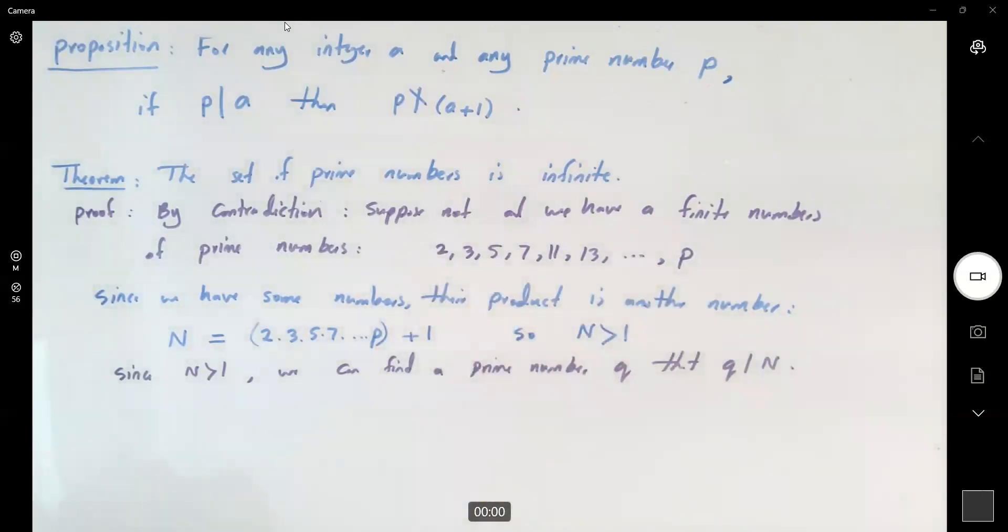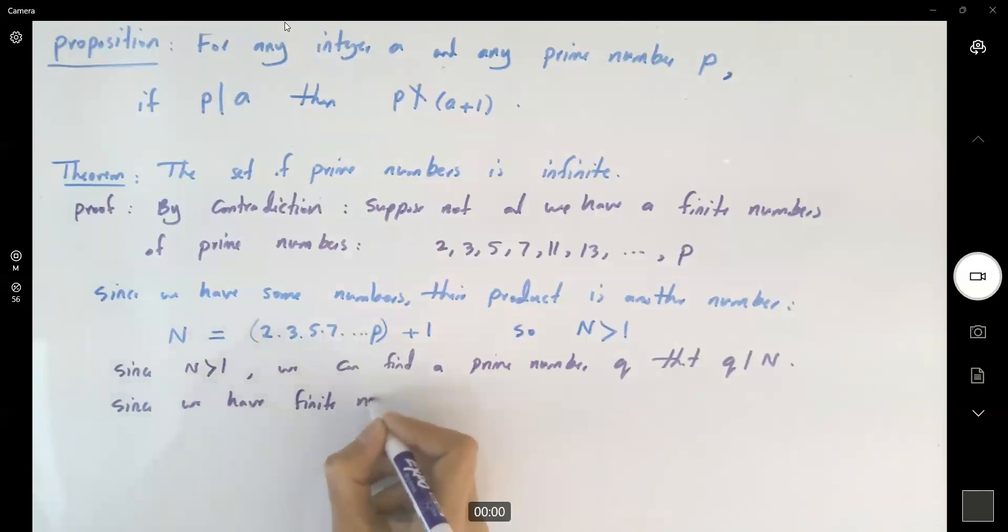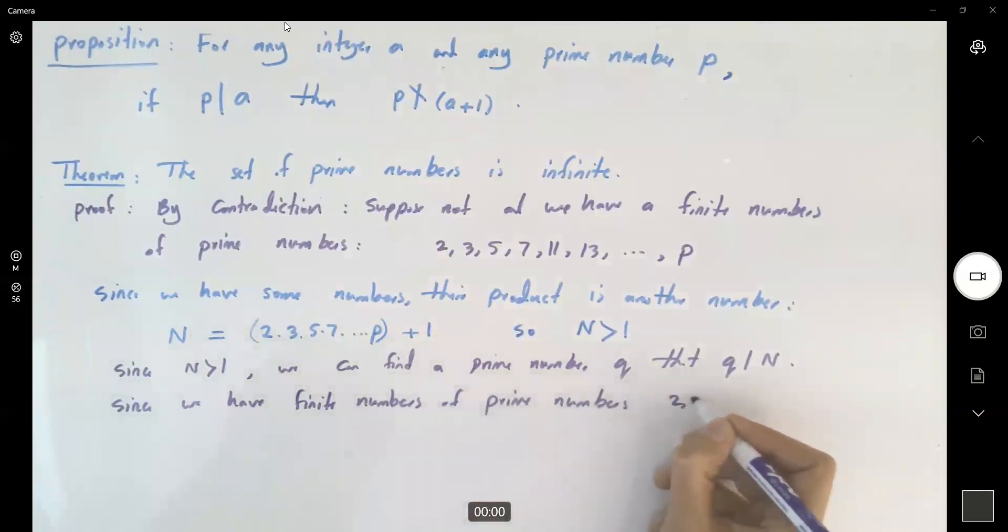Since we have finite numbers of prime numbers 2, 3, 5, 7, and p, q must be one of them.